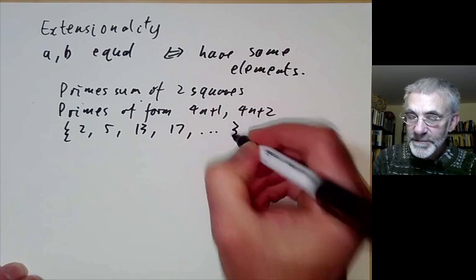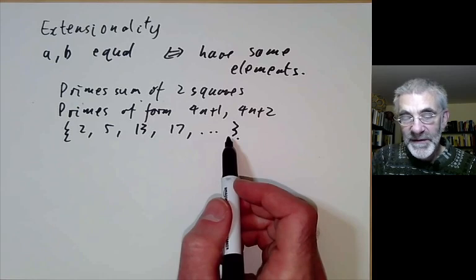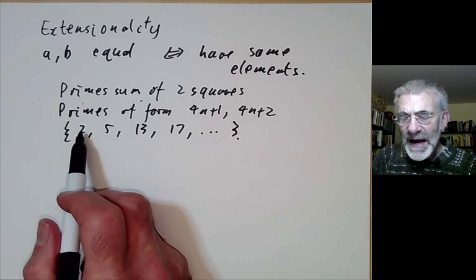Now these two are intentional definitions. You sort of say what properties the things have. This is almost an extensional definition. So an extensional definition means you just list all the elements satisfying the definition.